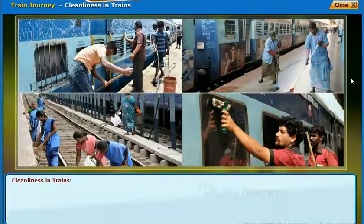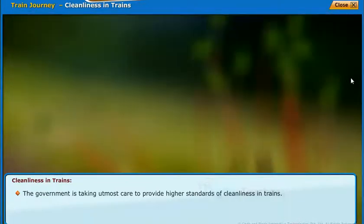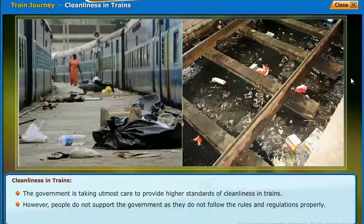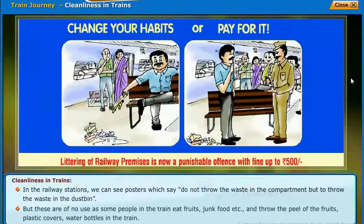The government takes utmost care to provide higher standards of cleanliness in trains. However, people do not always support this by following the rules properly. In railway stations, posters say: 'Do not throw waste in the compartment — throw waste in the dustbin.' But some people eat fruits and junk food and throw peels, plastic covers, and water bottles inside the train.